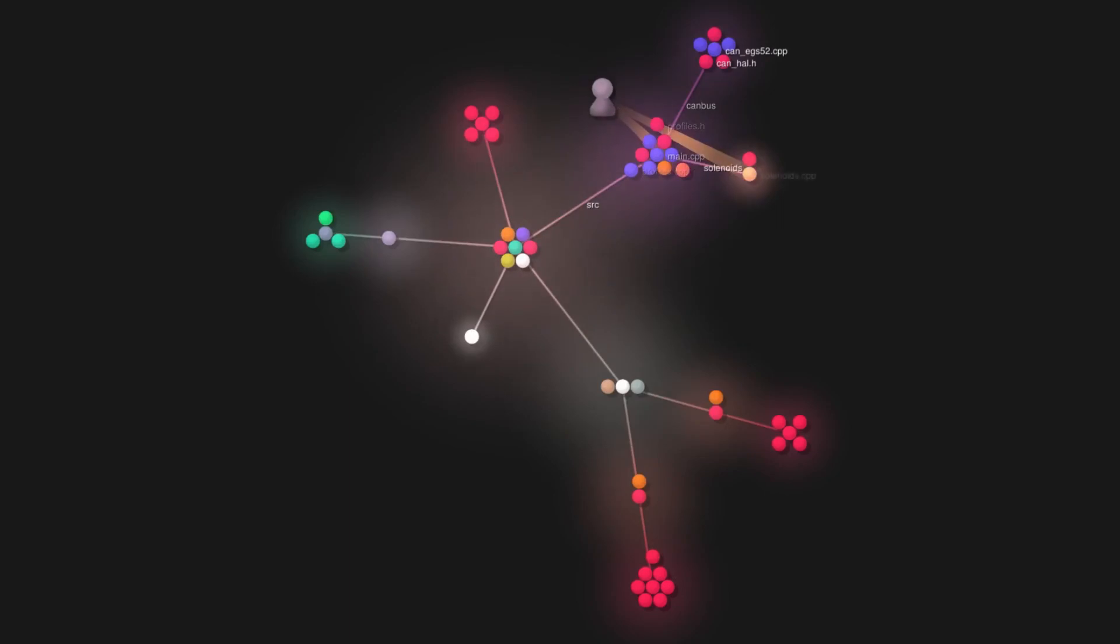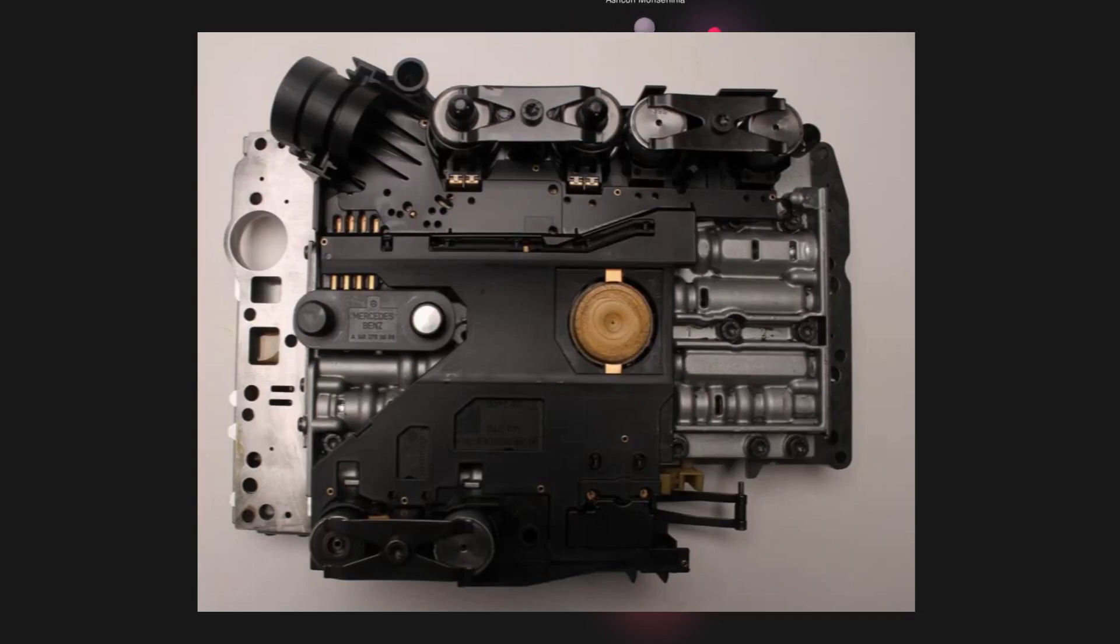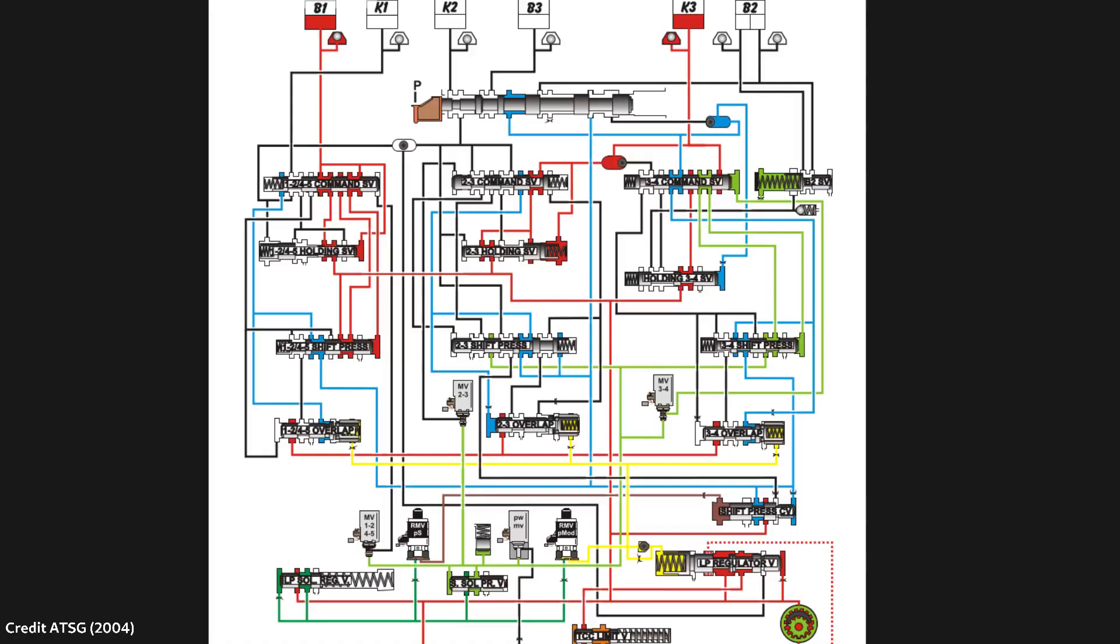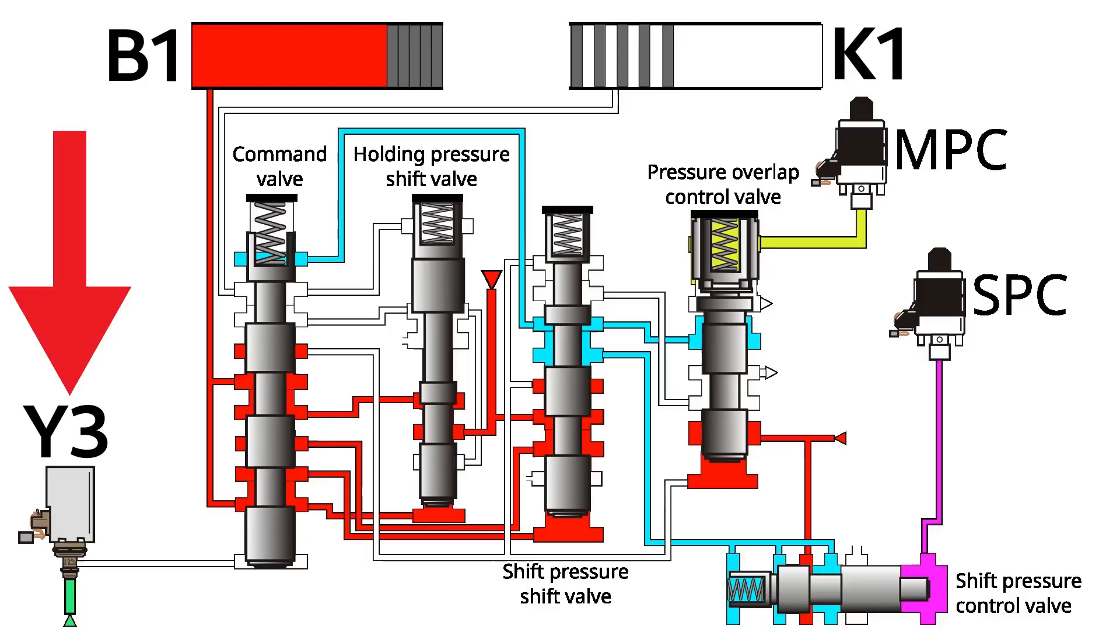Now, for the rest of the video to make sense, I'll need to explain how the 722.6 gearbox actually changes gears. The transmission has two pressure regulation solenoids in the valve body: shift pressure regulator and modulating pressure regulator, and three shift solenoids. The way the hydraulic valve body is laid out in the gearbox means that the shift solenoids activate one of the three shift groups. Each shift group consists of two clutch sets and four hydraulic valves. Let's look at an example. Here we see the Y3 shift solenoid, the modulating pressure solenoid, and the shift pressure solenoid. The Y3 shift valve can only control the B1 and K1 clutch sets. This allows the transitions between gears one and two, or four and five.